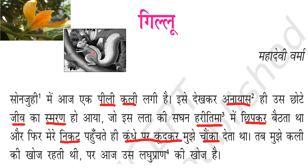Gillu is the name of this little squirrel and the entire story revolves around Gillu. Sonjuhi is a plant with yellow flowers. The authoress says that today in that plant there is a yellow bud — peeli means yellow, kali means bud.